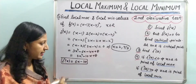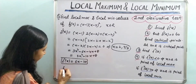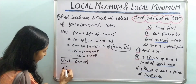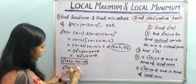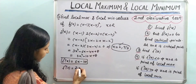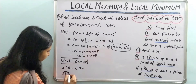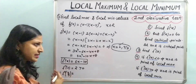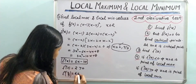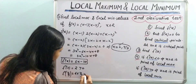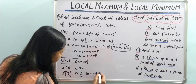Now we will find the second derivative value at the critical points. First, f''(2) = 6(2) - 10 = 12 - 10 = 2, which is greater than 0. Similarly, f''(4/3) = 6(4/3) - 10 = 8 - 10 = -2, which is less than 0.